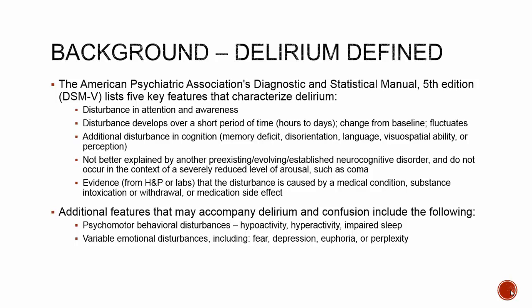Before getting into the article, some background: what is delirium? The DSM defines it with five key features: disturbance in attention and awareness, developing over a short period — usually hours to days — representing a change from the patient's baseline that often fluctuates throughout the day. There is usually an additional disturbance in cognition, such as memory, speech, or language.